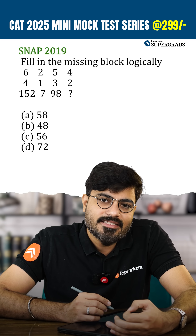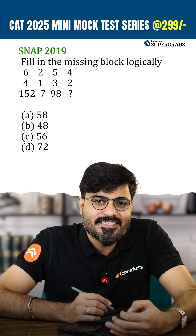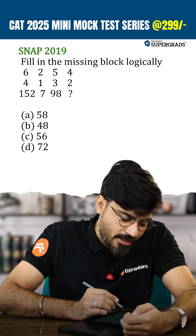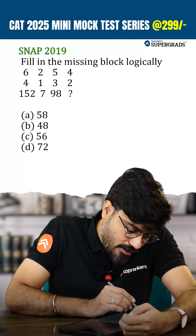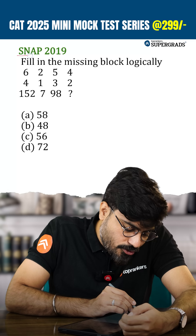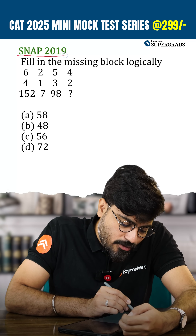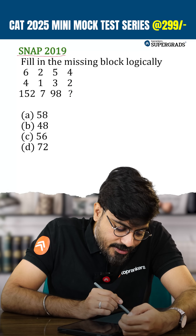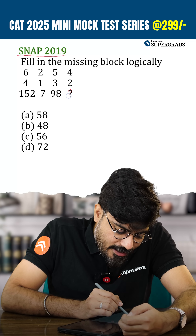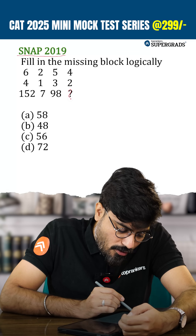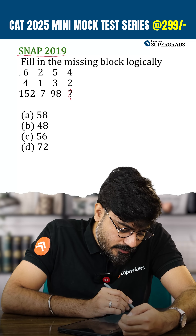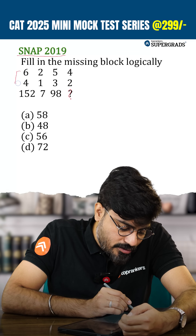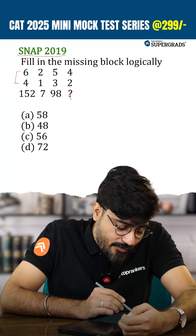Welcome to the DILR 60-second series. Let's look at this question from SNAP 2019. They have asked you to find the missing block logically.